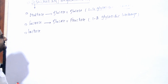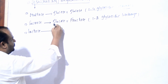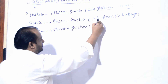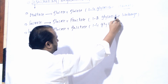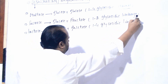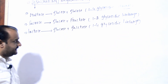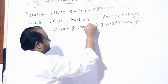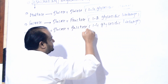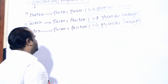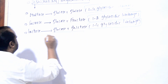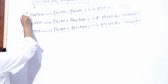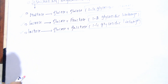In the third disaccharide example, that is lactose, which is glucose and galactose with one-four glycosidic linkage. Before I read this explanation, I will outline this for your MCQ. Glucose plus galactose makes lactose. Glucose plus fructose makes sucrose. Glucose plus glucose makes maltose. These are all the disaccharides.